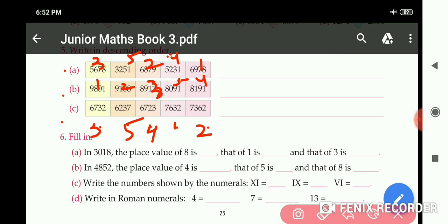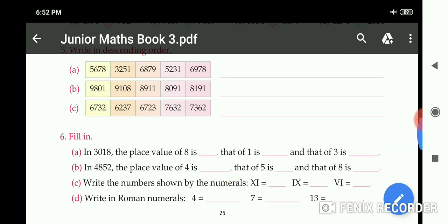Now question number 6: Fill in. In 3,018, the place value of 8 is 8, and that of 1 is 10, and that of 3 is 3,000. In 4,852, the place value of 4 is 4,000, 5 is 50, and 8 is 800.